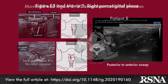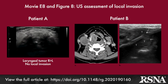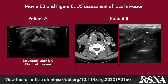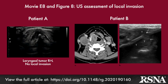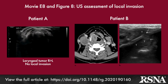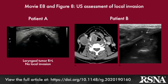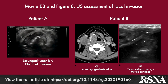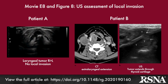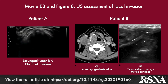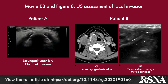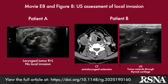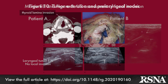In laryngeal cancer, the pretherapeutic evaluation for staging, treatment planning, and prognosis is comprised of laryngoscopy with cross-sectional imaging by CT and/or MRI. In particular, imaging is used to assess the submucosal extension of disease and invasion of the preepiglottic and paraepiglottic fat, cartilage, and the extra-laryngeal space.